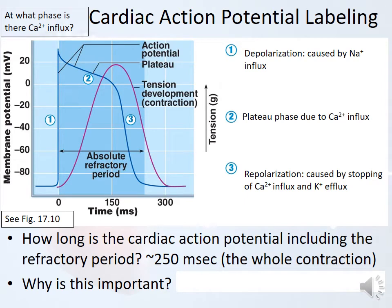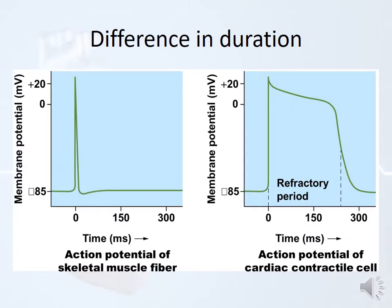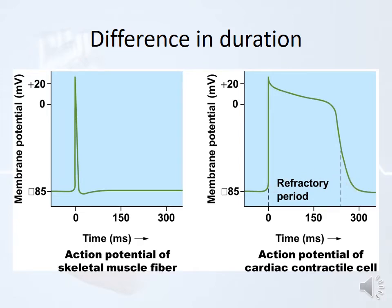This is so important because we really don't want tetanic contractions in the heart. We don't want long sustained contractions. We want the heart to contract all those muscle cells at once, pump a bunch of blood out, and then relax quickly so it can fill up again. We don't want sustained force in the heart — that plateau actually helps with that. If you put the skeletal muscle action potential on the same x-axis as the cardiac action potential, you see a very different duration: one to two milliseconds versus closer to 300 milliseconds.